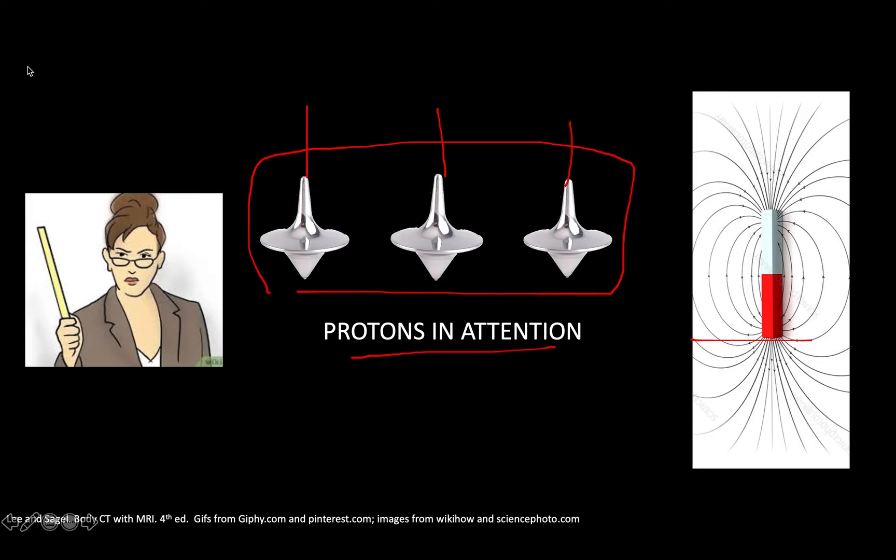The protons will align themselves to the magnetic field. They are now standing in attention. In reality, some of them will be upside down, but the general idea is that in the presence of the strong magnet they're going to align themselves to the direction of the magnetic field. Now let's take a look at just one proton. This proton is standing upright here on the dance floor. The floor here would represent the x and y plane, the transverse plane, while an imaginary pole in this direction will be the z axis. The z axis is representative of the longitudinal axis.